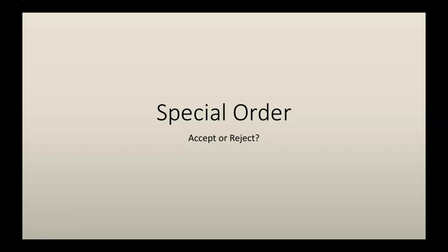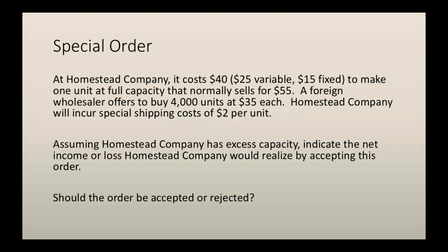Let's work through an example problem where you either have to accept or reject a special order. At Homestead Company, it costs $40 — $25 of variable costs and $15 of fixed costs — to make one unit at full capacity, that normally sells for $55. A foreign wholesaler comes to us and offers to buy 4,000 units at $35 apiece, and Homestead Company will incur a special shipping cost of $2 per unit.